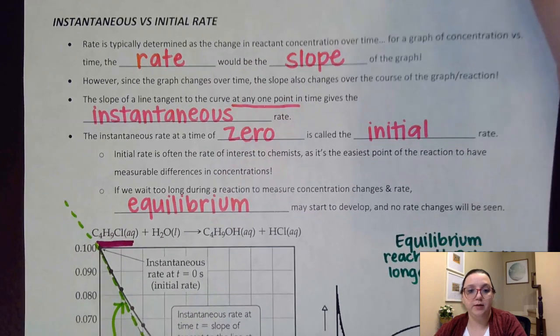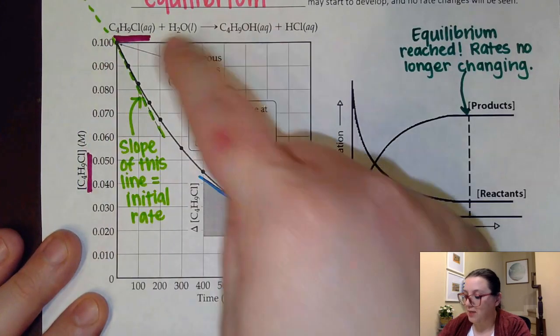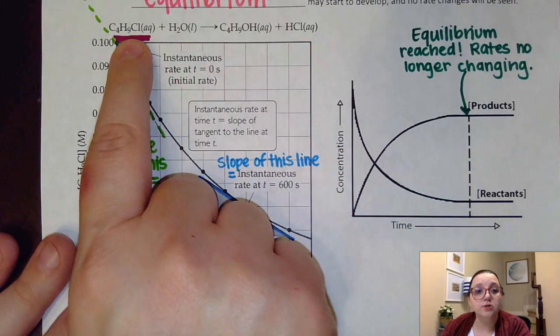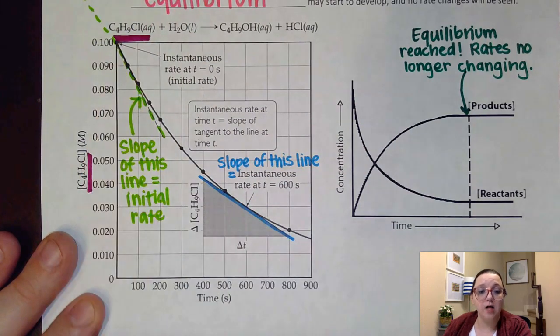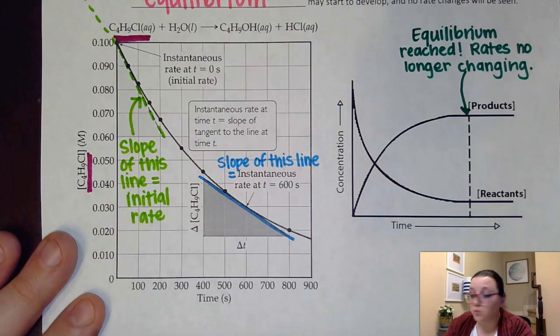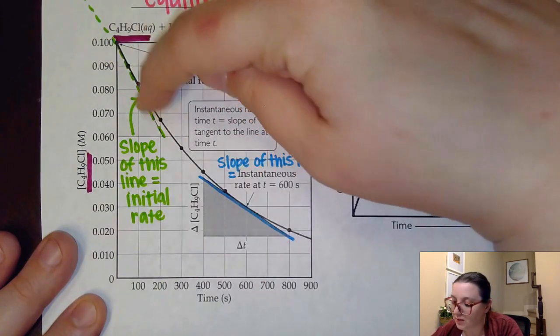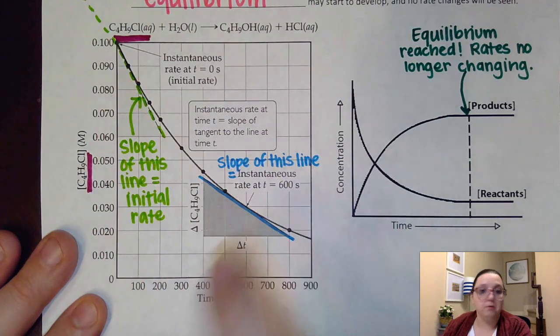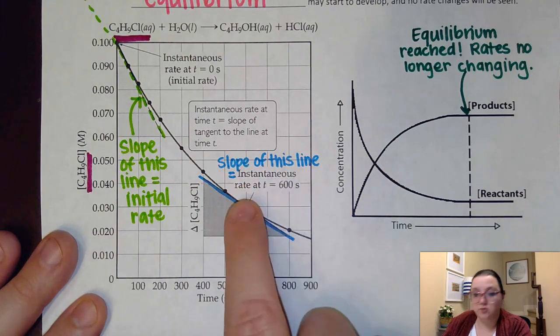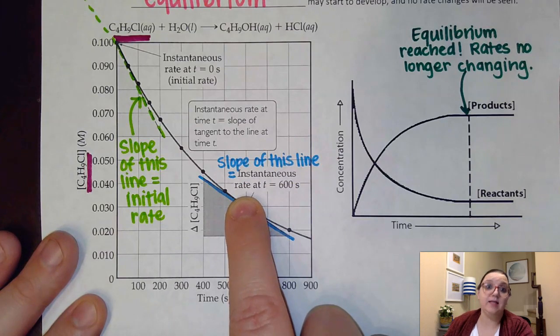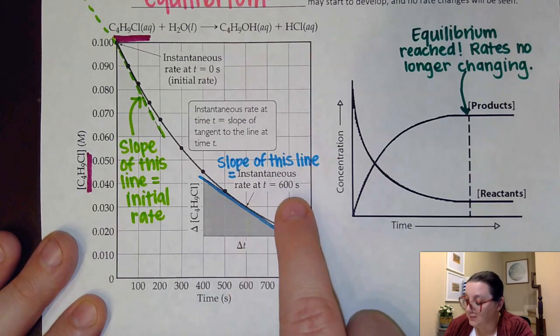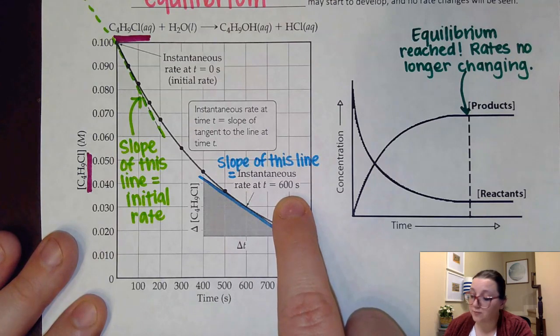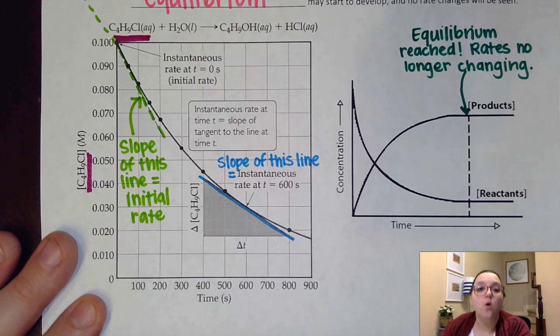So for example here, they gave us a reaction here and they gave us a curve of the concentration of this reactant C4H9Cl changing. You can see it decreases, which is consistent with it being on the reactant side. Okay. If I took the slope of the line right at the beginning here, we would call that an initial rate, but if I took the slope of the line wherever, I would just have an instantaneous rate, but I would need to specify what time it was at because that would be different. The instantaneous rate at T equals 600 seconds would be different than the instantaneous rate, say at 300 seconds or 100 seconds. All of those would have a different rate.